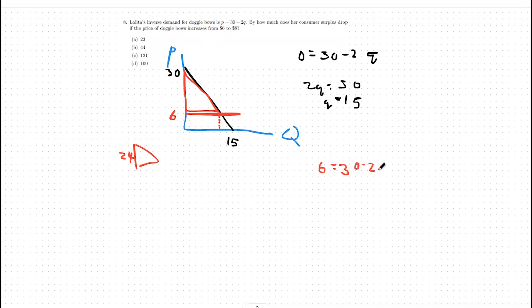minus 2q. So 2q equals 24. Our quantity will be 12 in this case. So that will be our width of this triangle.